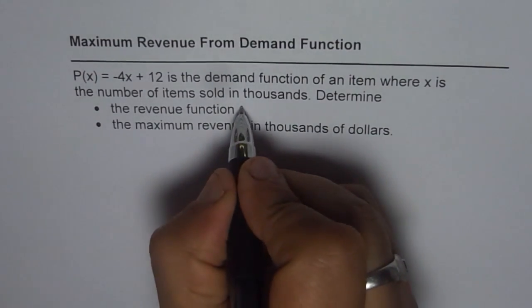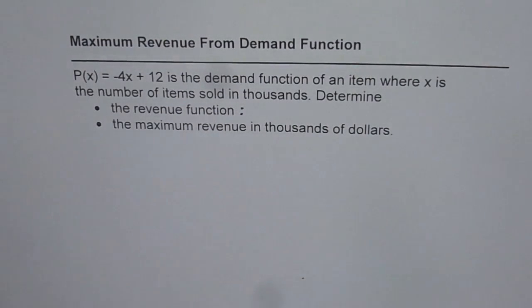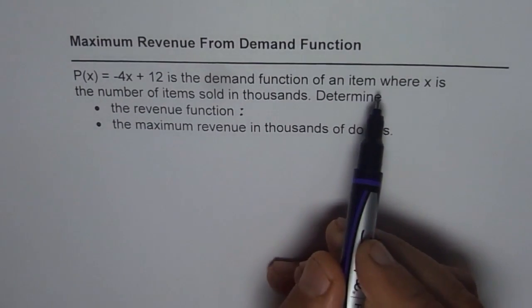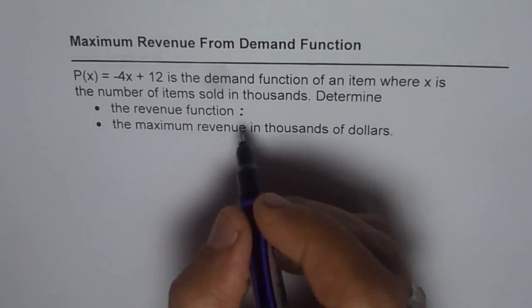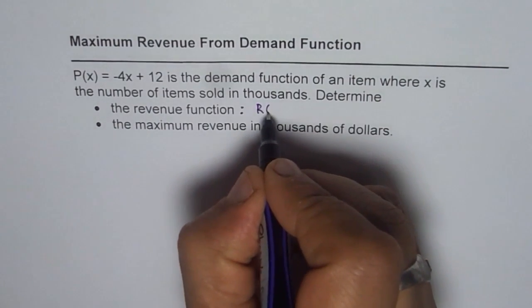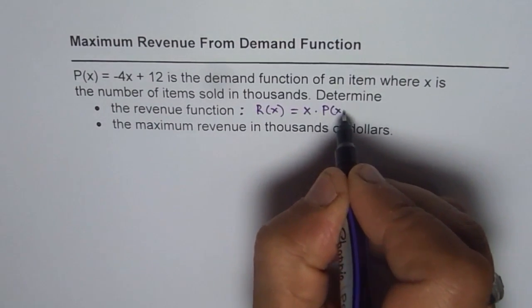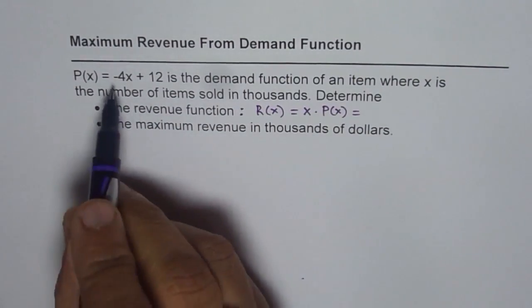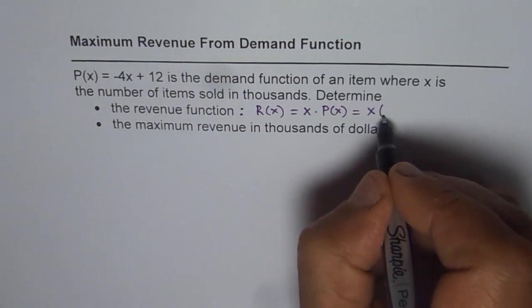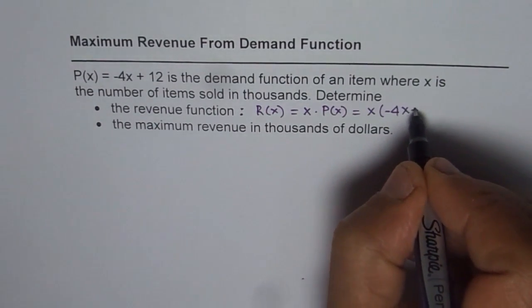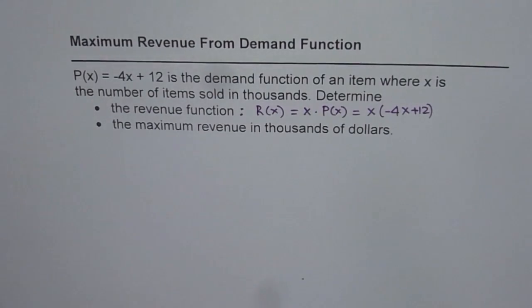Now what is revenue? Revenue is items sold times demand. So revenue function, we can write this as R(x) equals x times the demand function. So that will be x times (-4x + 12). So that is the revenue function.